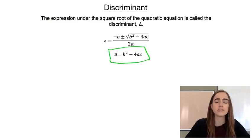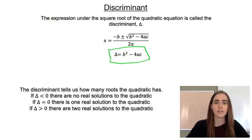What it's used for is it helps us figure out how many roots or x-intercepts or zeros our quadratic equation is going to have. So we've got three cases. If the discriminant, if delta is less than zero, because it's under the square root sign, we can't take the square root of a negative number. So that means there are no real solutions to that quadratic. It won't have any x-intercepts.